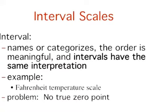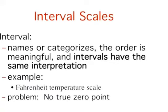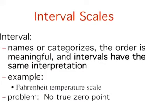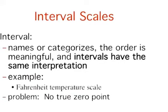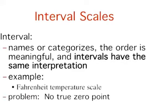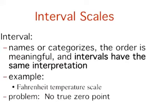Interval scales are not perfect, however. In particular, they do not have a true zero point, even if one of the scaled values happens to carry the name zero. The Fahrenheit scale illustrates the issue. Zero degrees Fahrenheit does not represent the complete absence of temperature, the absence of any molecular kinetic energy. In reality, the label zero is applied to its temperature for quite accidental reasons, connected to the history of temperature measurement. Since an interval scale has no true zero point, it does not make sense to compute ratios of temperatures.